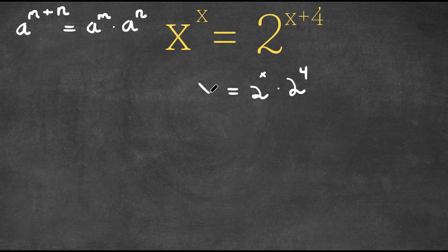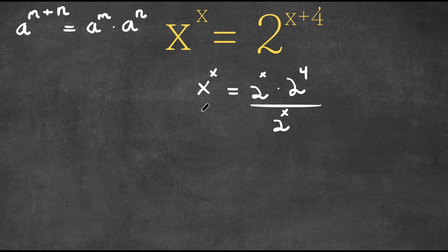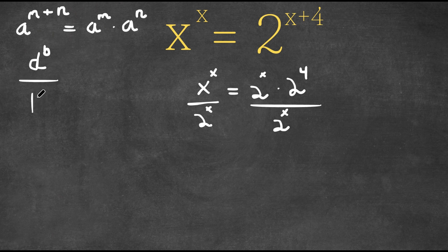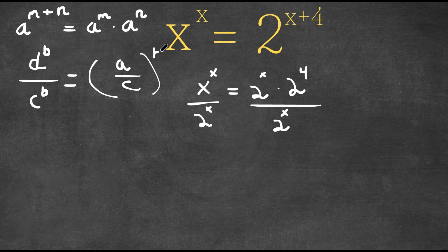This is equal to x to the power of x. Now I'm going to divide both sides by 2 to the power of x. If we have something in the form a to the power of b over c to the power of b, this can actually be written as parentheses a over c to the power of b. So x to the power of x over 2 to the power of x can be written as x over 2 to the power of x.